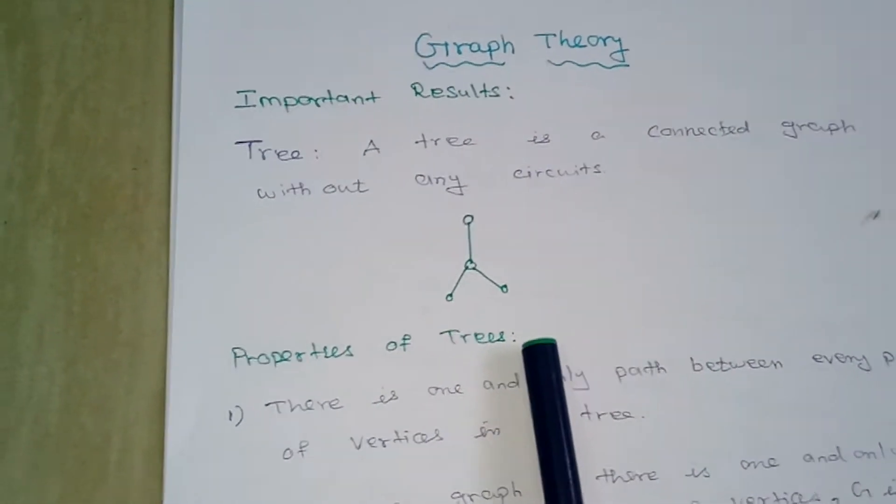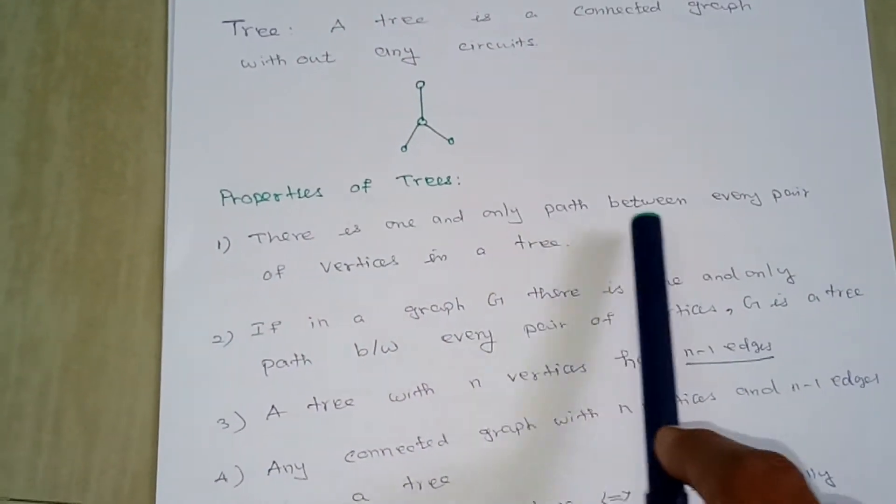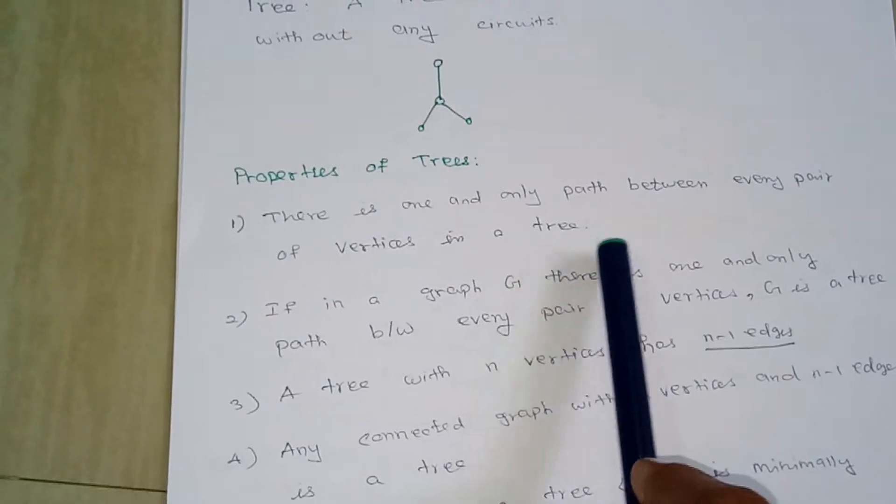These are examples of trees. Next, properties of trees. There is one and only path between every pair of vertices in a tree.